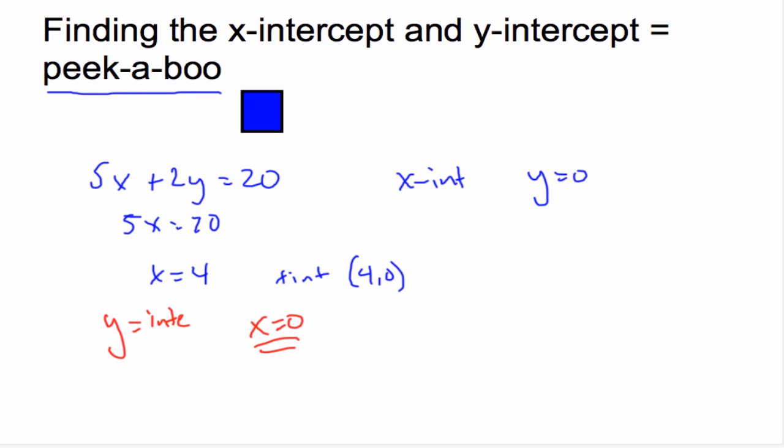And so what I do in this case, it's the same thing as taking this, making x 0 means that basically vanishes. And so I'm left with 2y equal to 20, so y equals 10, which gives me the y-intercept, which is 0, 10.